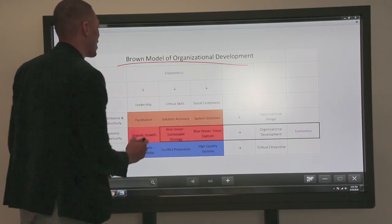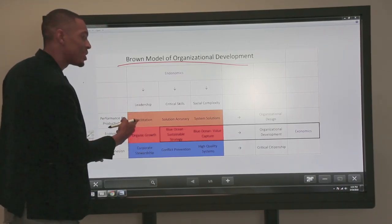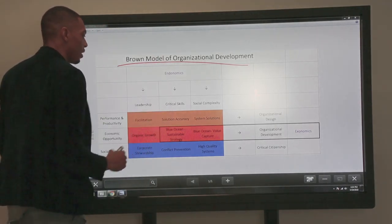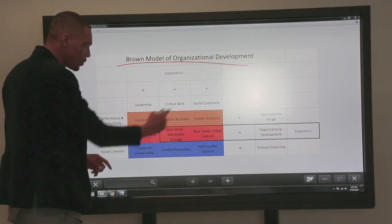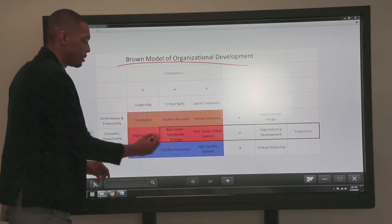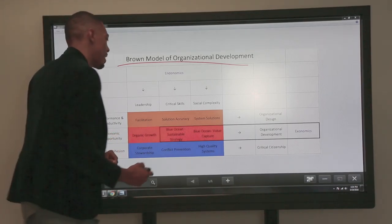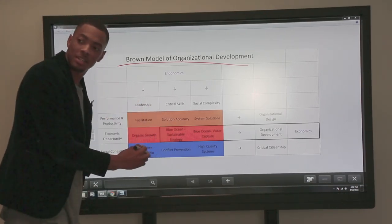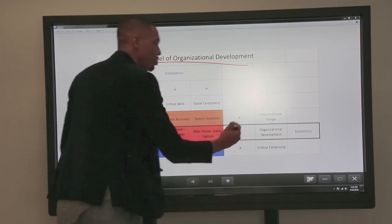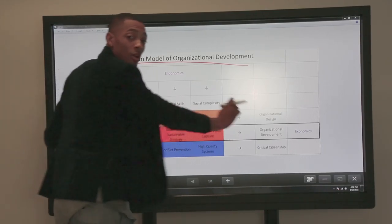If you recall back in the day, A1 would be facilitation, B1 would be solution accuracy, A2 would be organic growth, and so on. As I'm constructing this, I then started to realize that one of the other ways that you could read it was across the rows.